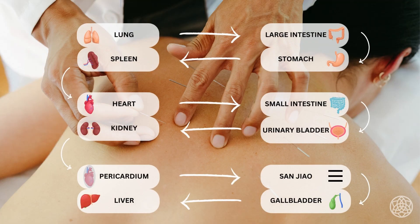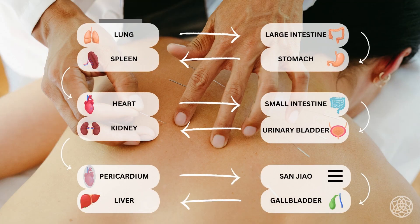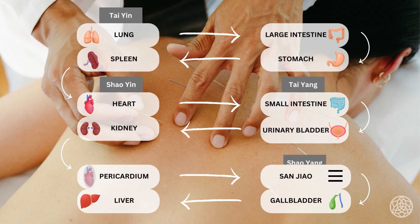In this course, we're going to take a look at the six divisions of the meridians: Taiyin, Taiyong, Xiaoyin, Xiaoyong, Zhuoyin, Yongming.